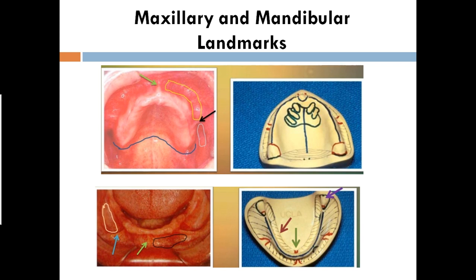For the mandible, from the labial frenum, the posterior extent should be up to the retromolar pad. Always the impression must record the retromolar pad.